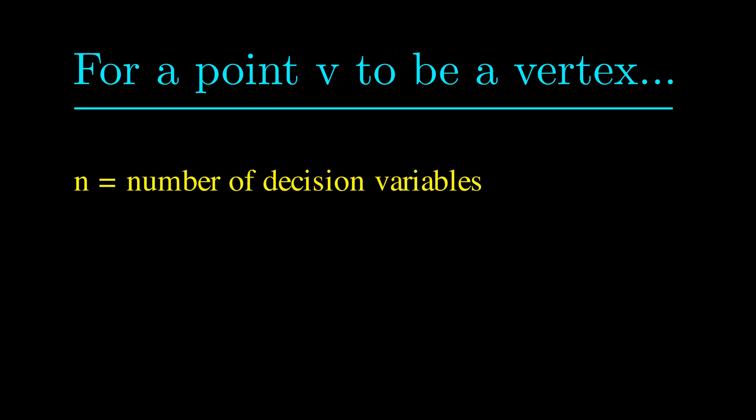Our observations in two dimensions can be generalized to cases where we have more than two variables. Suppose we have n variables. Then the first difference is that we need to have at least n tight constraints at a vertex v instead of just two.